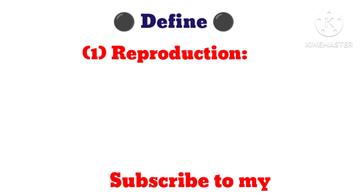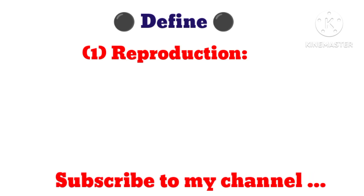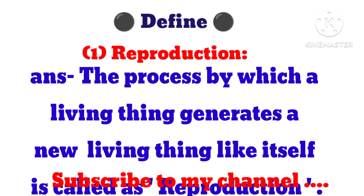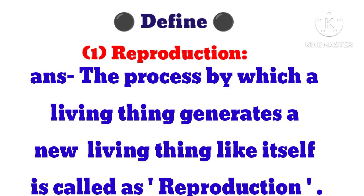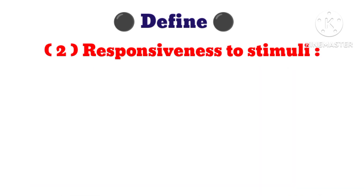Define 1. Reproduction. Answer: The process by which a living thing generates a new living thing like itself is called reproduction.